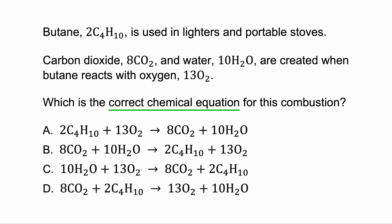What is the correct chemical equation for this combustion? Everything that combines together goes on the left; things that are produced go on the right. Butane is used in lighters and portable stoves. Carbon dioxide and water are created when butane reacts with oxygen. The things that react — the reactants — go on the left side. So butane and oxygen both need to be on the left side since they're reactants.